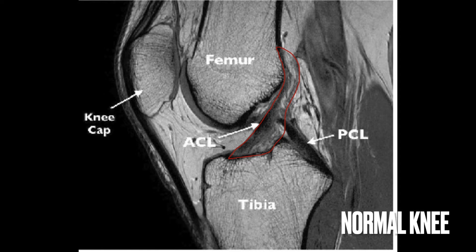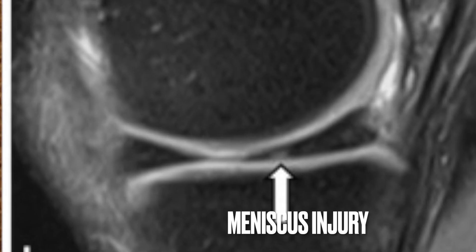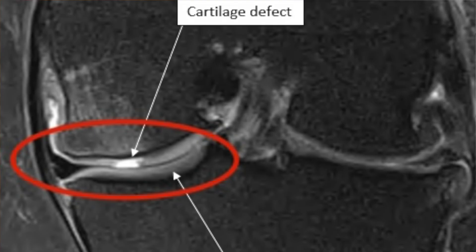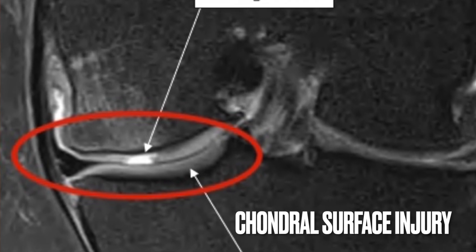MRI is the investigation of choice for confirming the integrity of the ACL. It's also very effective at identifying associated injuries such as meniscal or chondral surface injuries, and also to assess the other knee ligaments.